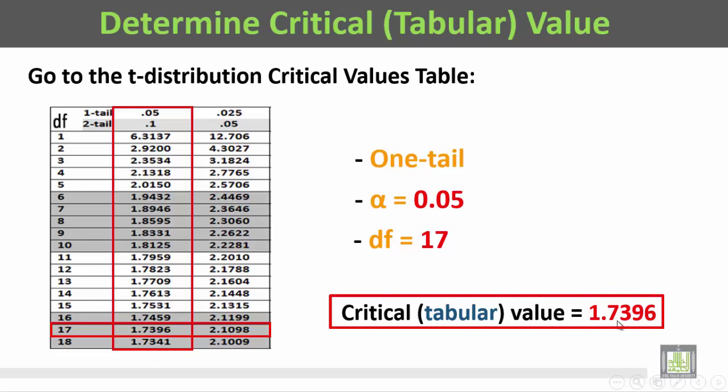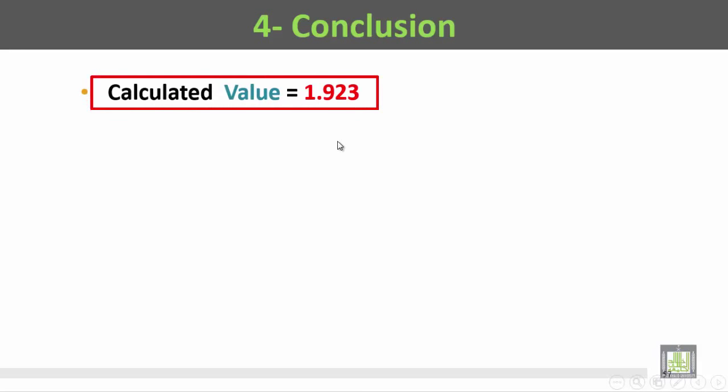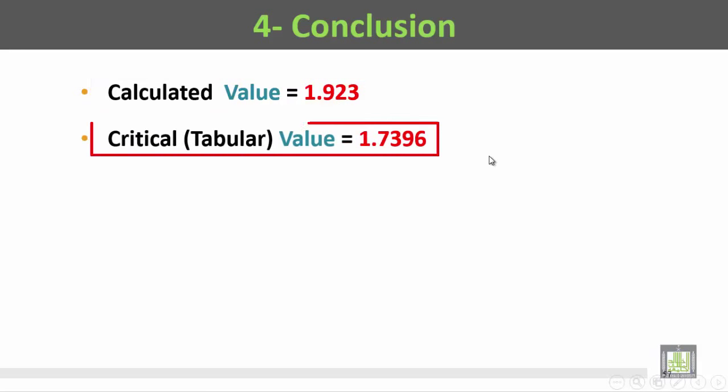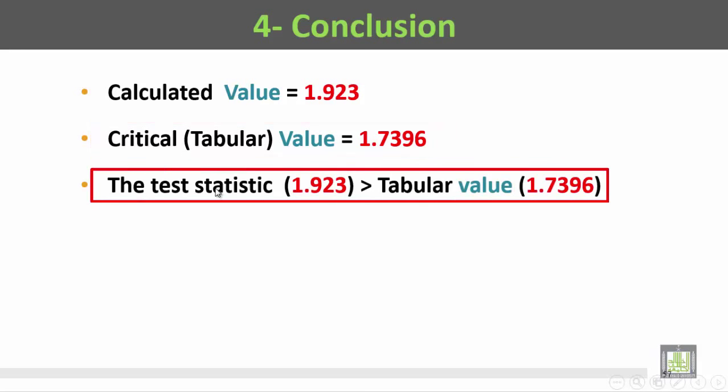Finally, the conclusion. We are going to compare the calculated value, which is 1.923, with the tabular value, which equals 1.7396. This means the calculated value of 1.923 is greater than the tabular value of 1.7396.